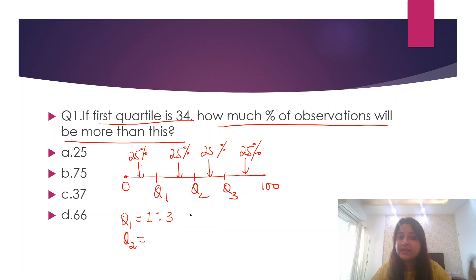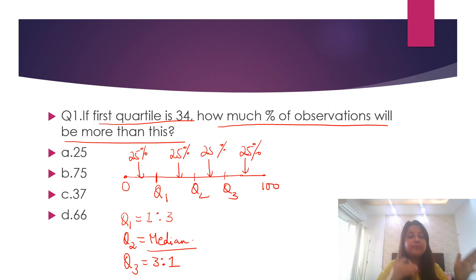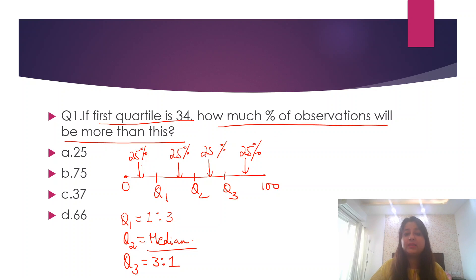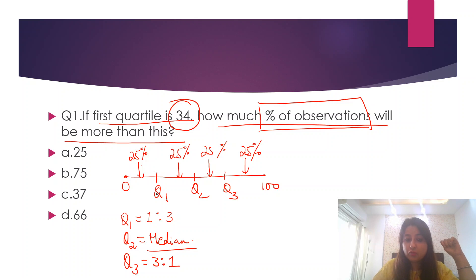Since Q2 divides my data set exactly 50% to the right and 50% to the left, Q2 becomes the median. Q3 divides my data set in a ratio of 3:1, meaning 75% of values lie before Q3 and 25% lie towards the right of Q3. So now, if the first quartile is at 34, how much percentage of observations will be more than this?